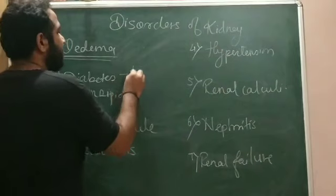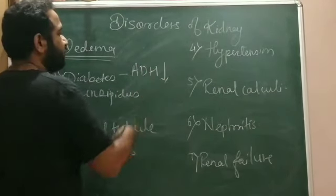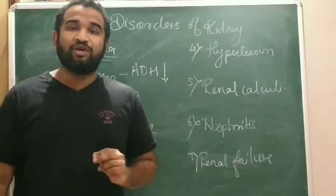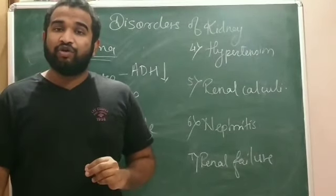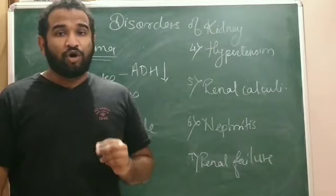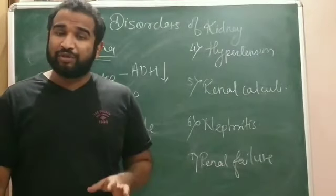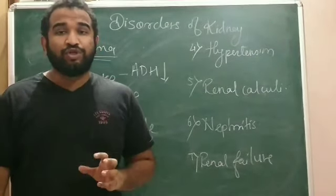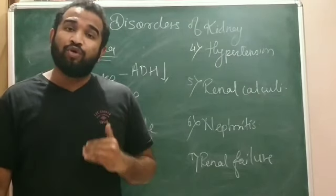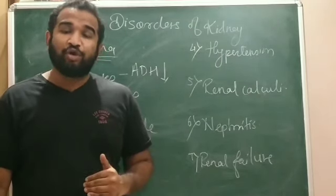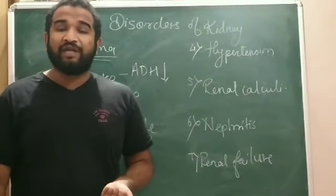The second disorder is diabetes insipidus. Diabetes insipidus is caused due to deficiency of anti-diuretic hormone (ADH). ADH is a hormone produced by the hypothalamus and secreted by the posterior lobe of the pituitary gland, and it acts on the kidneys for more and more water reabsorption.